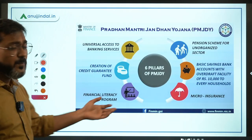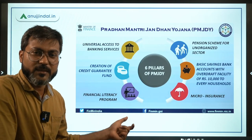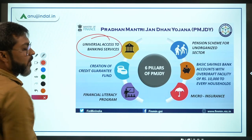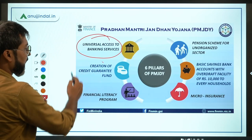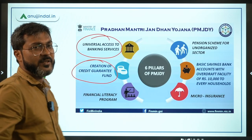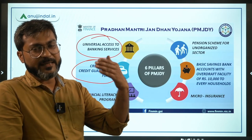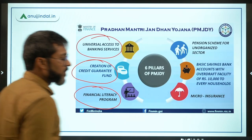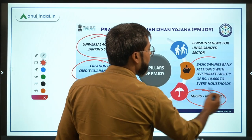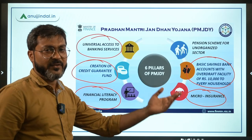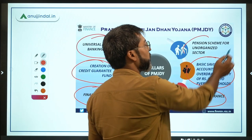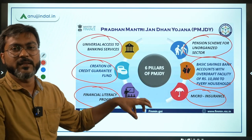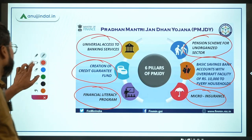The six pillars of Pradhan Mantri Jan Dhan Yojana are: universal access to banking services, creation of a credit guarantee fund for direct benefit transfer, a financial literacy program, micro insurance, basic savings bank accounts with overdraft facility, and a pension scheme for the unorganized sector.